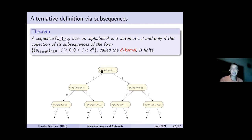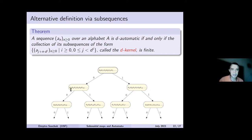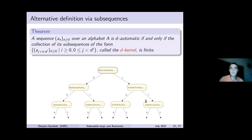An alternative characterization of automatic sequences: for D=2, start from your sequence and create two subsequences — one with all even-indexed terms and one with all odd-indexed terms — and repeat this process. The collection of all sequences obtained this way is called the D-kernel. If the D-kernel is finite, then the sequence is automatic, and vice versa. We can denote these subsequences as sections of the original sequence at finite words over the alphabet X. Geometrically, using the portrait, the portrait of the subsequence A_{n,v} is simply the portrait that hangs below vertex V.